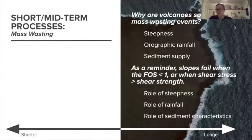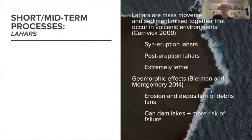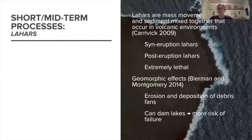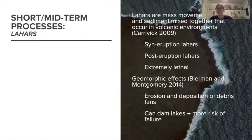The large amount of volcanic debris from eruptions provides massive sediment that can be mobilized into extremely destructive landslides. One example of a super destructive type of mass wasting from volcanoes are lahars — an Indonesian word referring to mass movements of water and sediment mixed together in volcanic environments. Lahars can occur during an eruption (syn-eruptive lahars), often triggered by the melting of summit snow and ice caps, or post-eruptively when volcanic craters or caldera lakes dammed with volcanic sediment are breached. Over 30,000 deaths have been caused by lahars. They affect surrounding environments through erosion and deposition of debris fans and by damming lakes — which increases the risk of further failure, creating a positive feedback loop.